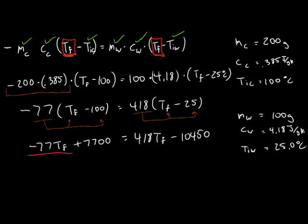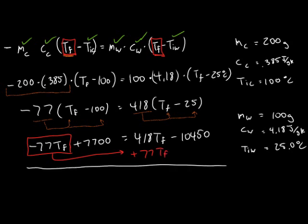Now, we'll take the negative 77 Tf that's on the left and move it to the right. When we move it, it becomes positive 77 T final. If we add these together, we'll get 495 Tf. We will still have minus 10,450 also on the right and 7,700 on the left.